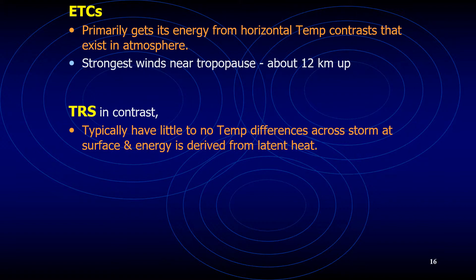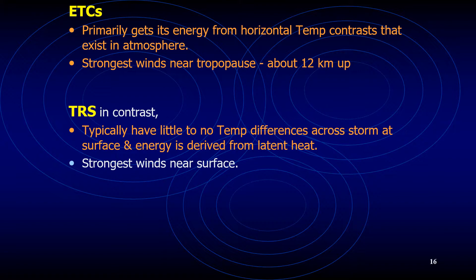A hurricane weakens with height, and the area of low pressure at the surface may actually become an area of high pressure, normally above 12 kilometers. Mid-latitude cyclones, on the other hand, are cold core lows that usually intensify with increasing height, with a cold upper-level low or trough above or to the west of the surface low. A hurricane usually contains an eye where air is sinking, while mid-latitude cyclones are characterized by centers of rising air. Hurricane winds are strongest near the surface, whereas the strongest winds of the mid-latitude storm are found aloft in the jet stream.